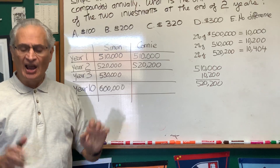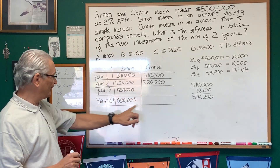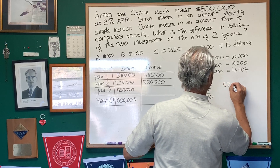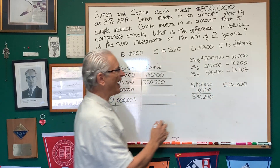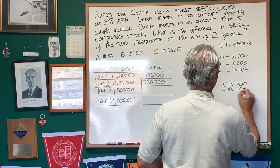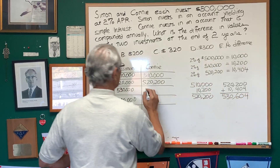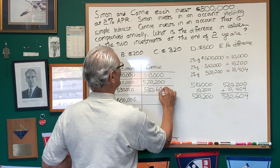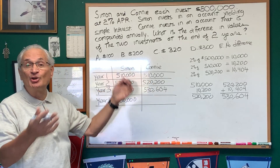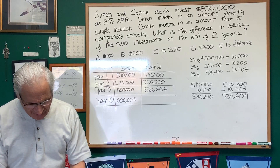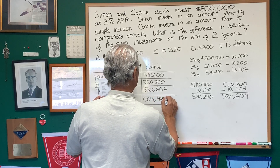So the answer is B, $200. Now I just wanted to continue this for the third application of compound interest. We have at the end of the second year $520,200. We're going to multiply that by 2% and get $10,404. And we're going to add that $10,404 to get $530,604 at the end of three years — Connie's investment is even greater because the interest is being based on the accumulated sum. And after 10 years, if you apply this 10 times, I have the calculation here — it comes out to $609,497.21.